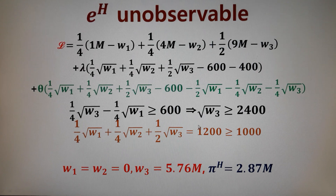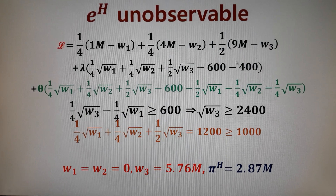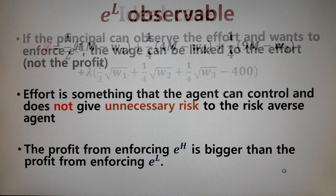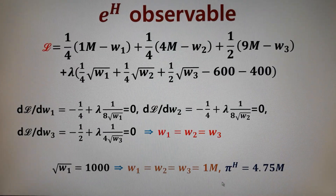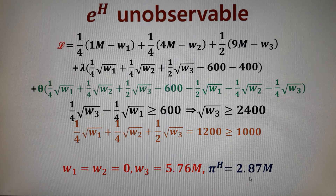Plugging these wages into the profit function: (1/4)×(1M − 0) + (1/4)×(4M − 0) + (1/2)×(9M − 5.76M), the expected profit PiH = 2.87 million. This is a considerable drop from 4.75 million in the observable case — down to 2.87 million.